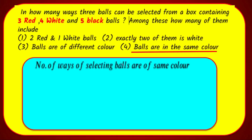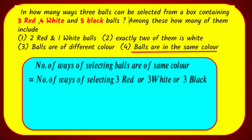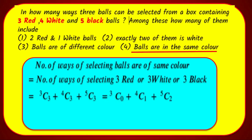Fourth sub-question: Balls are of the same color. We select 3 red, or 3 white, or 3 black. The number of ways is 3C3 + 4C3 + 5C3. Using NCR = NC(n−r): 3C0 + 4C1 + 5C2 = 1 + 4 + 10 = 15 ways.